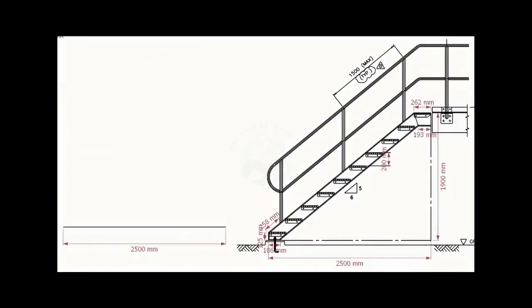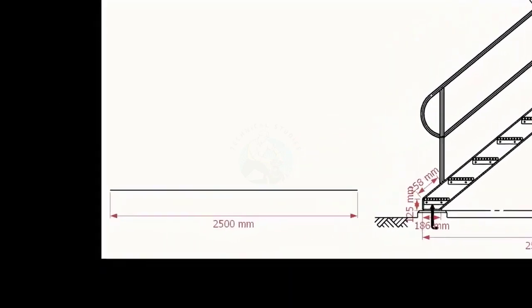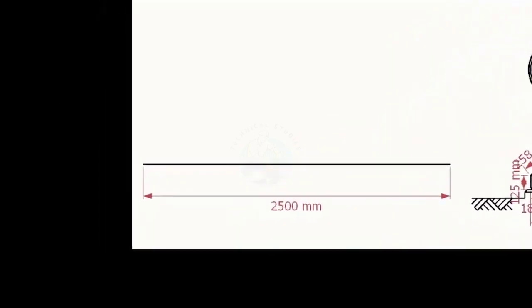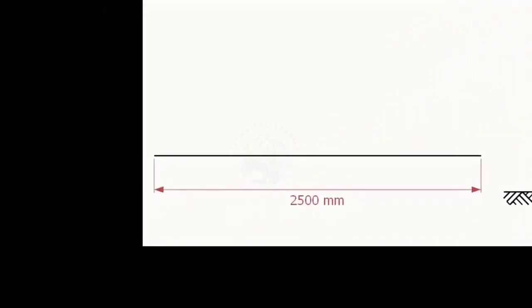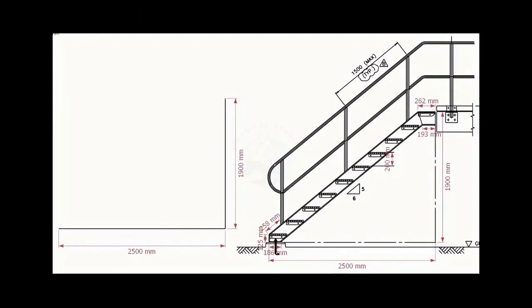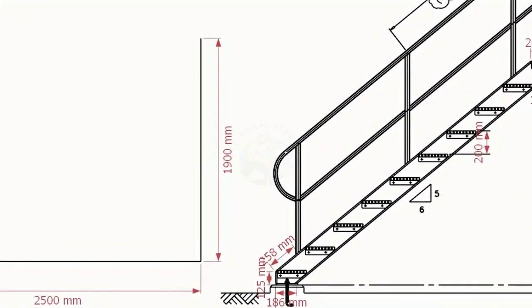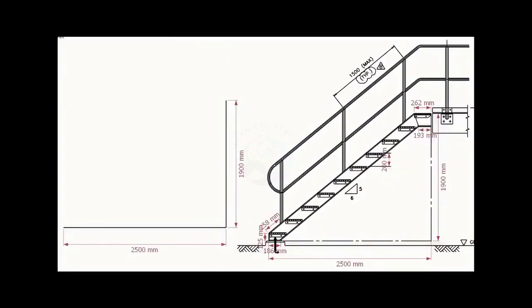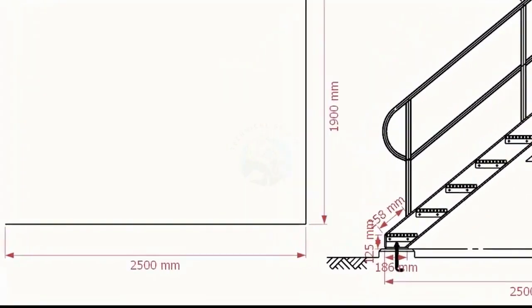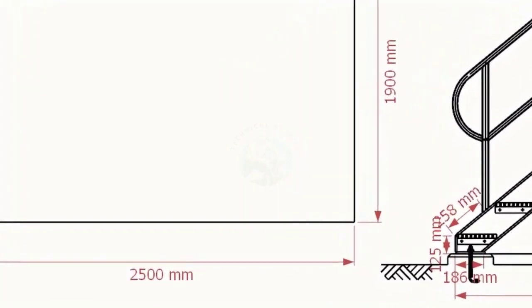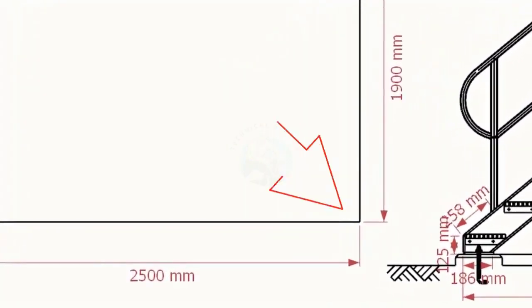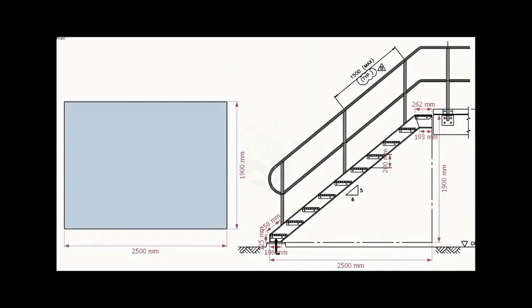Let us start a layout on a leveled plate or platform. Draw the bottom length 2500mm. Draw the width 1900mm. Make sure the included angle is 90 degrees. Let us complete the rectangle.